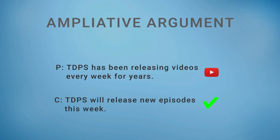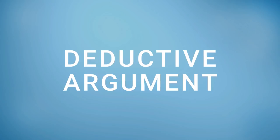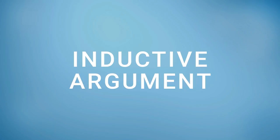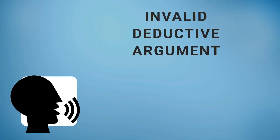There are new potential premises that could invalidate the argument. For example, YouTube has been hacked by the Russians and the site has been taken offline for a month — so we're not going to be uploading new videos. The premises of a deductive argument guarantee the conclusion no matter what other premises are added. A strong inductive argument has premises that suggest the conclusion is probably true, but other premises could be added that would invalidate it. If someone intends their argument to be deductive but their conclusion is not guaranteed by their premises, then you know it's a bad argument and not just ampliative.